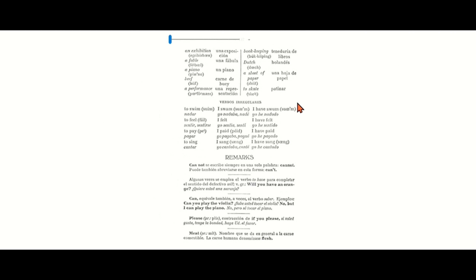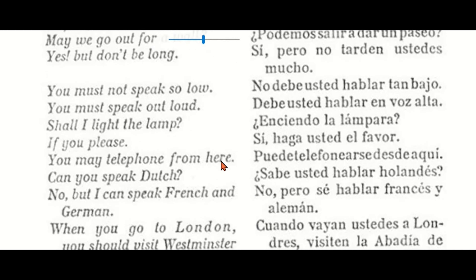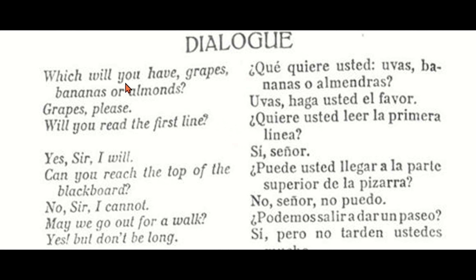So now we go to the dialogue. Which will you have — grapes, bananas, or almonds? — ¿Qué quiere usted? ¿Uvas? ¿Plátanos? ¿O almendras? Grapes, please — uvas, por favor.